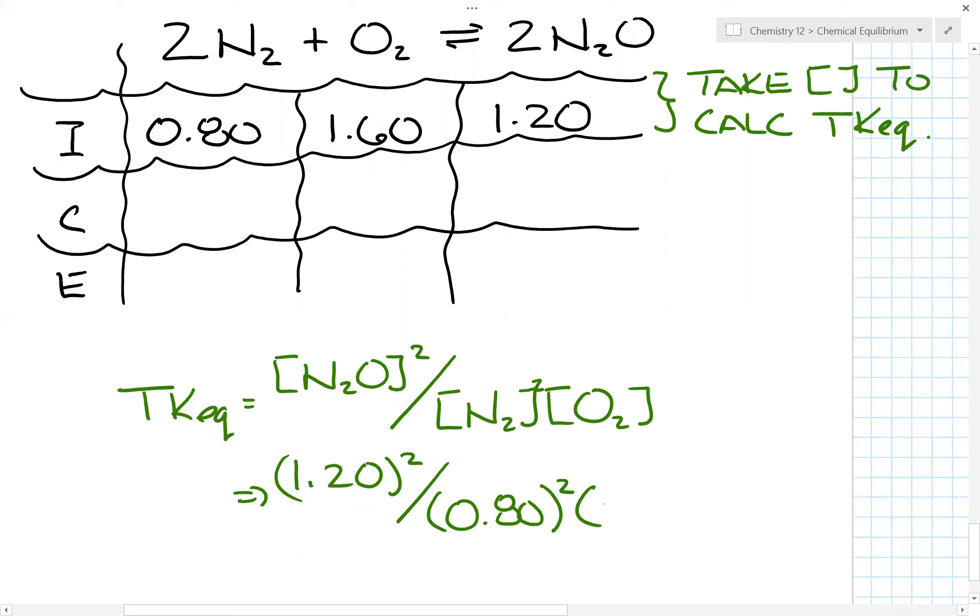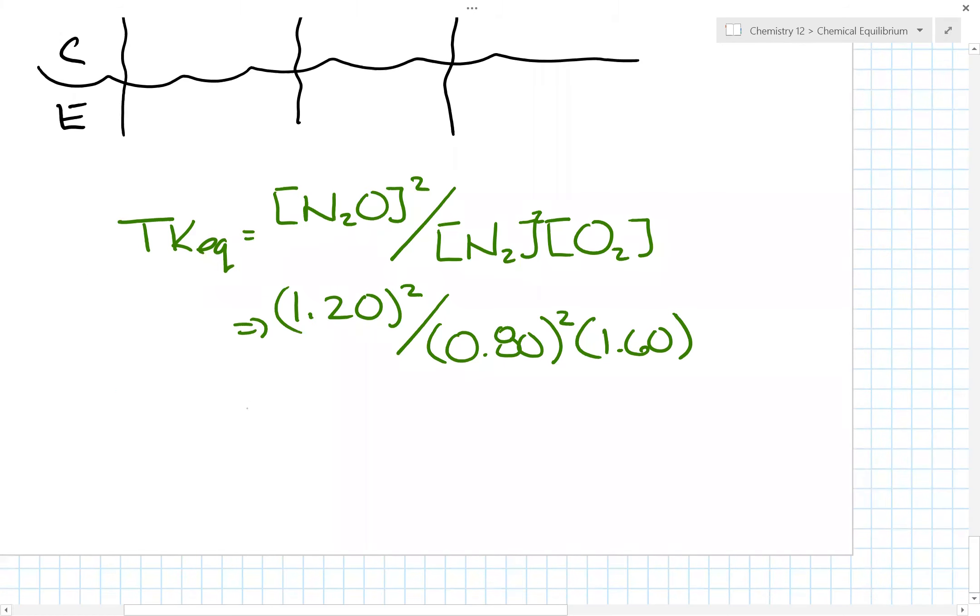Now if we take these numbers, so 1.2 squared divided by 0.8 squared divided by 1.6, again, answer of 1.41.